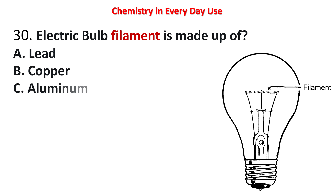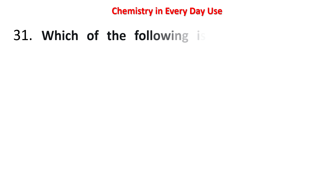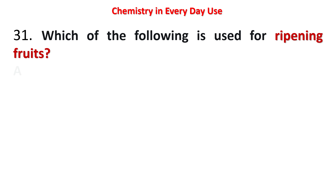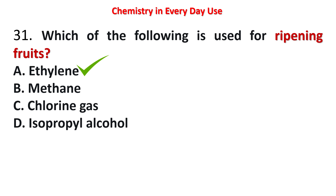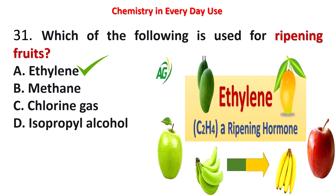Next question: electric bulb filament is made up of — lead, copper, aluminium, or tungsten? The answer is tungsten. Next question: which of the following is used for ripening fruits? Options: ethylene, methane, chlorine gas, isopropyl alcohol. The answer is ethylene (C2H4) — it is a ripening hormone.